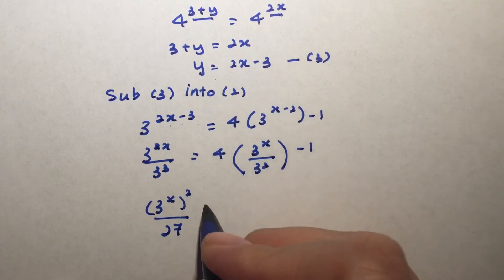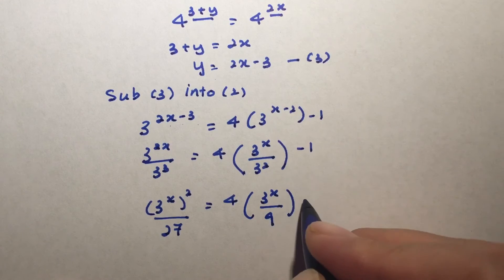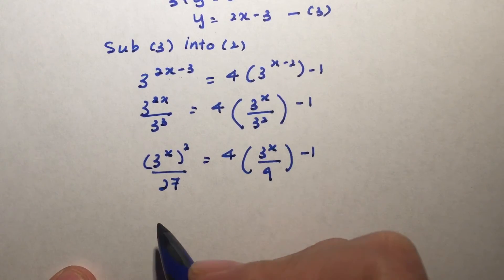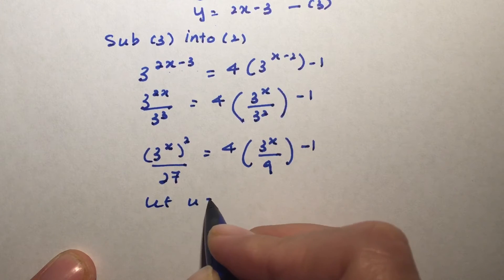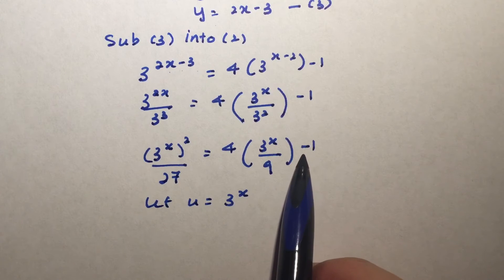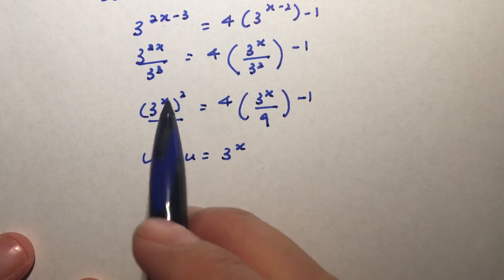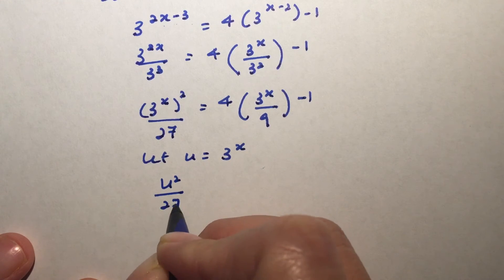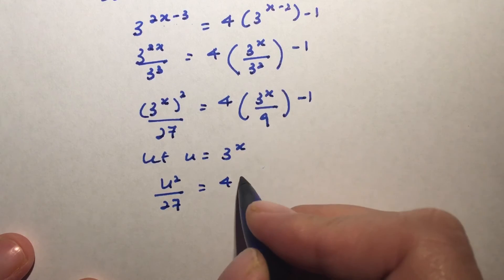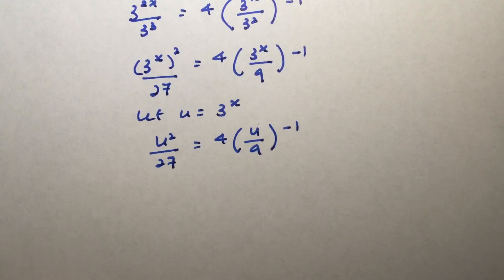And for this one here, this is 3 to the power of x, and 3 squared is 9. So similar to the previous example, I'm going to say let u be 3 to the power of x. Because there's no way for us to simplify. Remember, this is a subtract, so no other option but to use a substitution. So now that we have actually decided that u is 3 to the power of x, this will be u squared, and this is u. Doesn't look quite nice because we have a denominator of 27 here and 9 here.